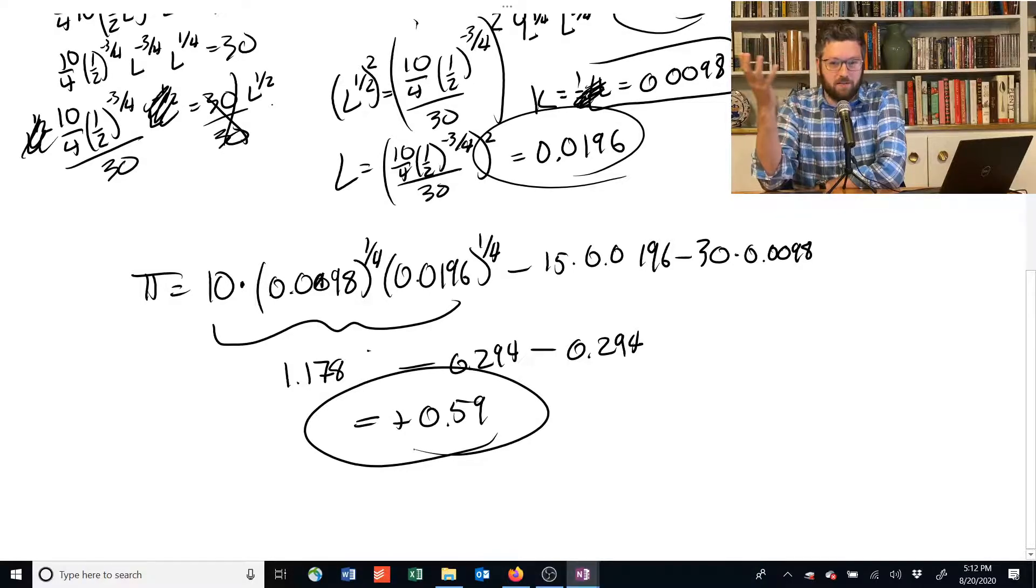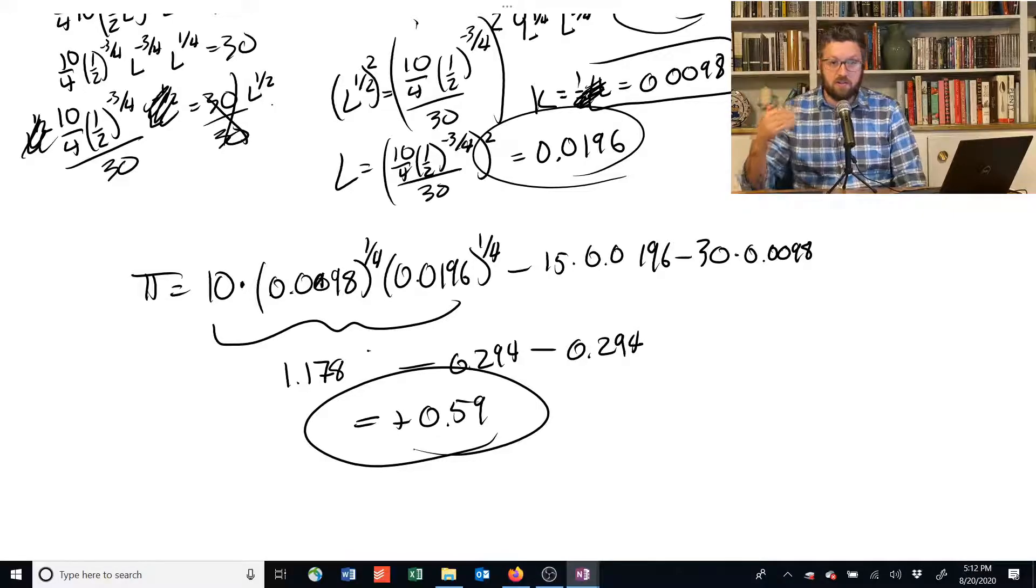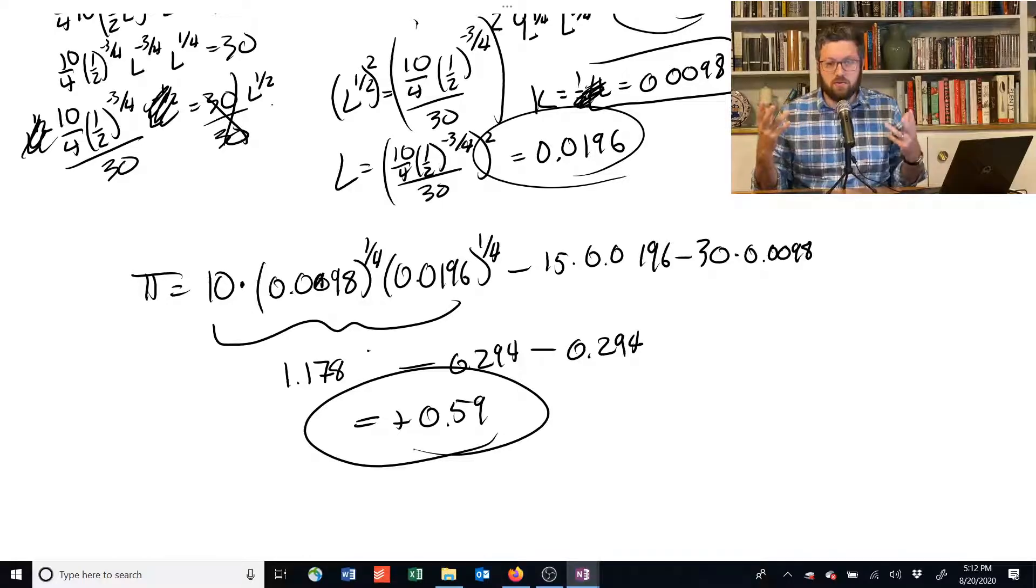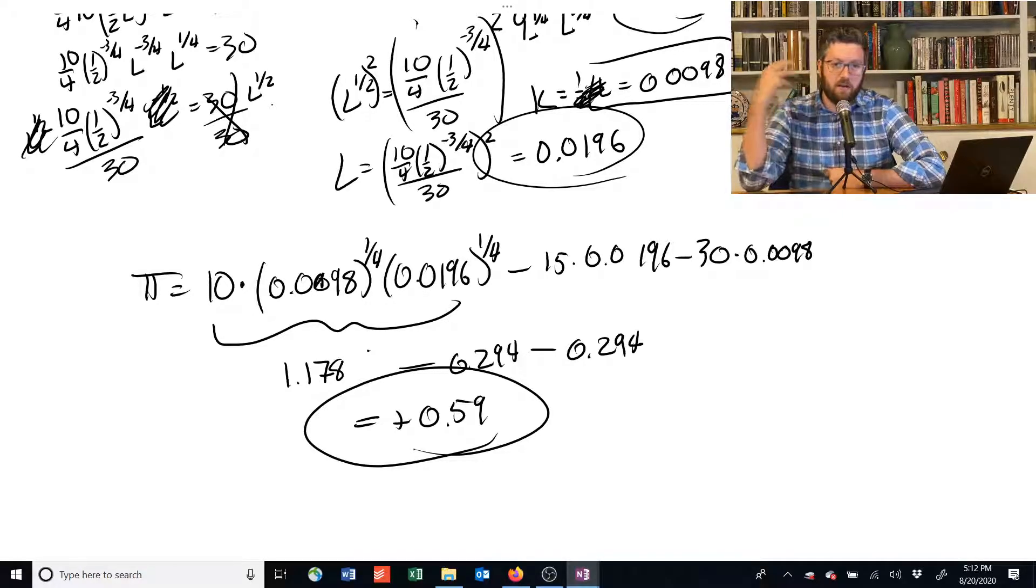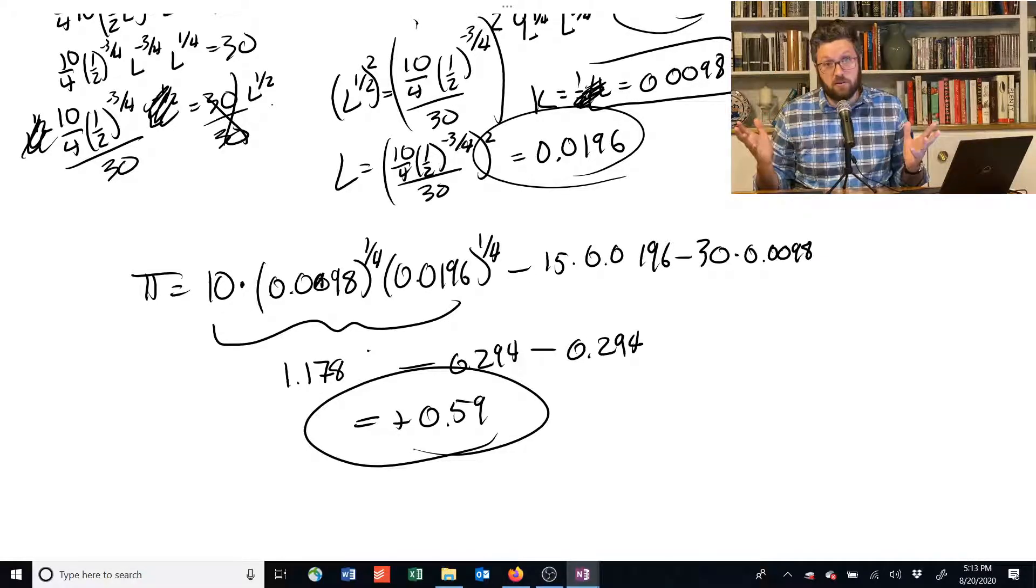So this is how you solve these problems. You take the first order conditions. You solve the resulting system of equations, and then you use that to get capital and labor, and if you need to know the actual profit, you can plug that into the original profit function to figure out how much profit they get. It's a little bit tedious, and the biggest error is just not getting lost in the math, not making little typos, but that's the system that you use.